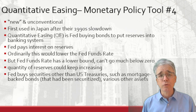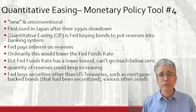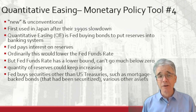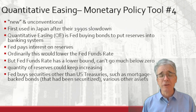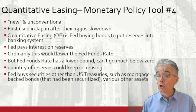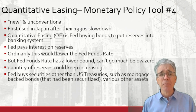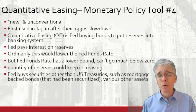Monetary policy tool number four is quantitative easing. This is relatively new in the U.S. since the 2007–2008 financial crisis. Central bankers being a conservative bunch of people, so even though it's been used in the U.S. for 15 years, even longer in Japan, it's still considered new. Quantitative easing is the Fed buying bonds — a whole lot of different kinds of bonds, not necessarily only government bonds — to put reserves in the bank system.